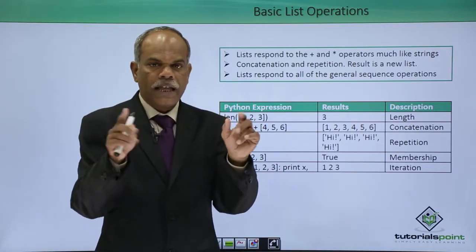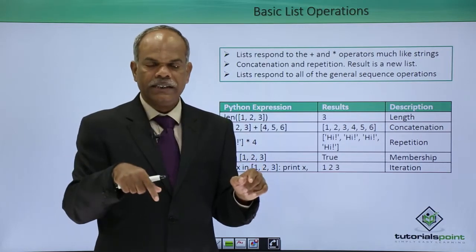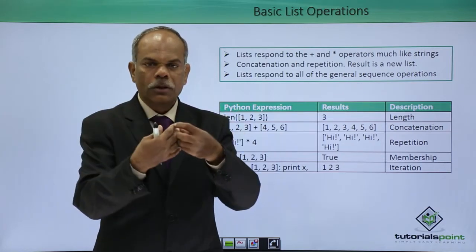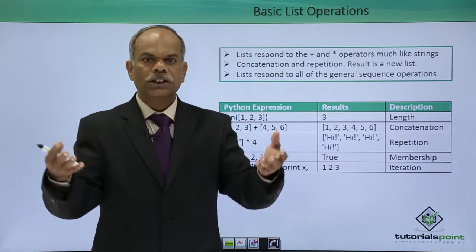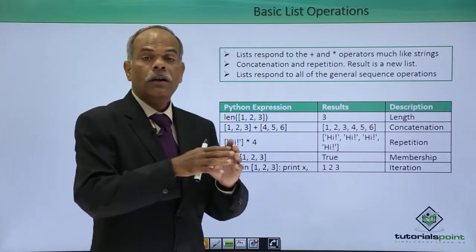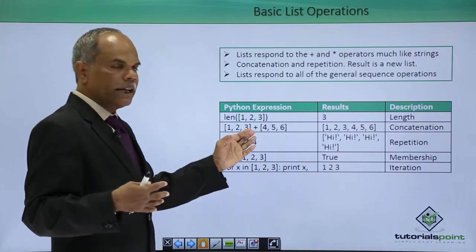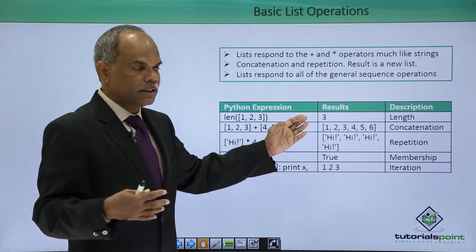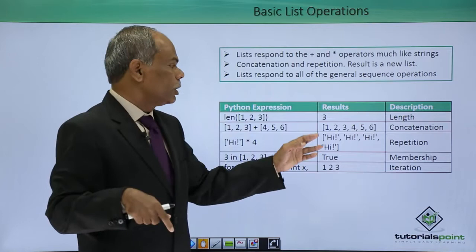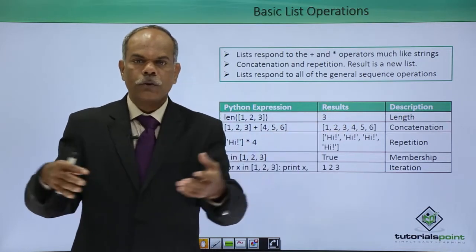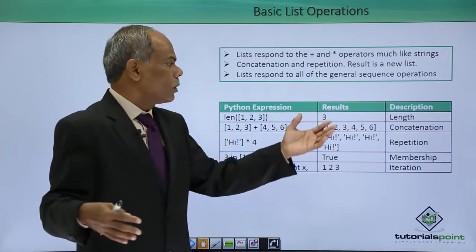If I have two lists and I put a plus inside this, then the two lists will be concatenated. It will form a new list consisting of both the elements from both lists. If I have 1, 2, 3 as one list and 4, 5, 6 another list, if I put a plus, then the new list formed will contain 1, 2, 3, 4, 5, 6. It is a concatenation.